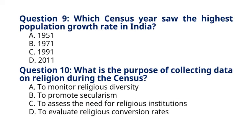Question 9: Which census year saw the highest population growth rate in India? A. 1951. B. 1971. C. 1991. D. 2011. The correct answer to question 9 is option A: 1951. Explanation: The 1951 census recorded the highest population growth rate in India's history.